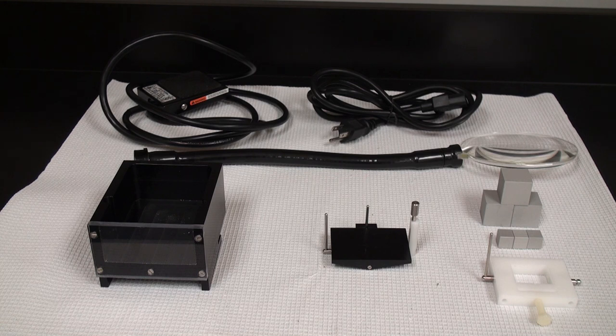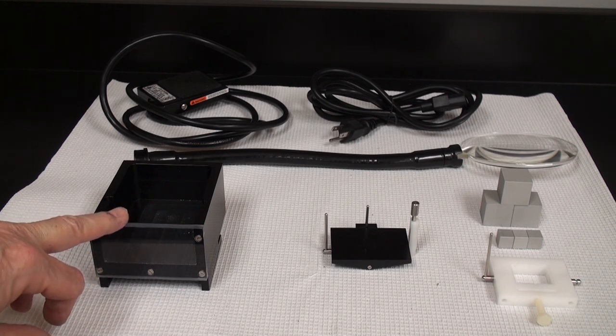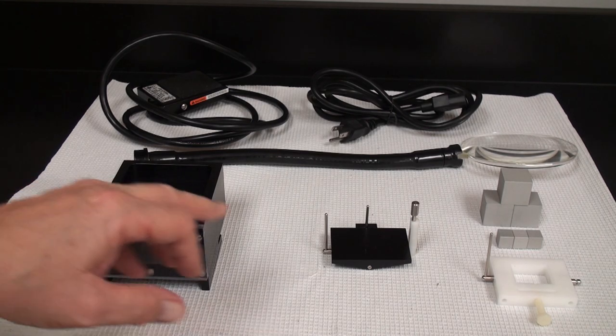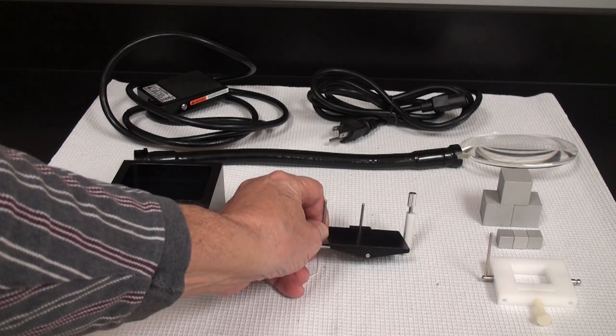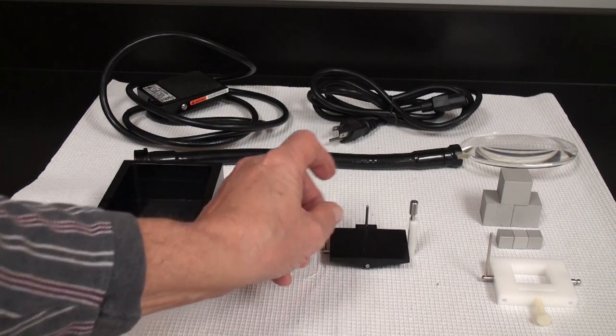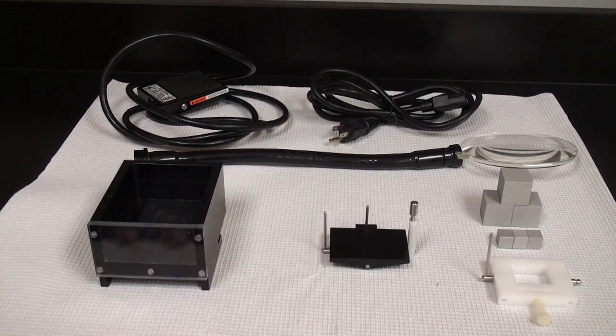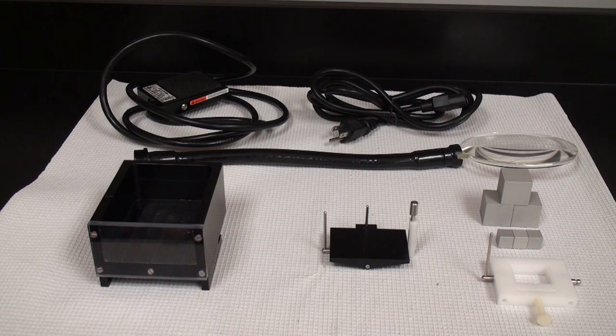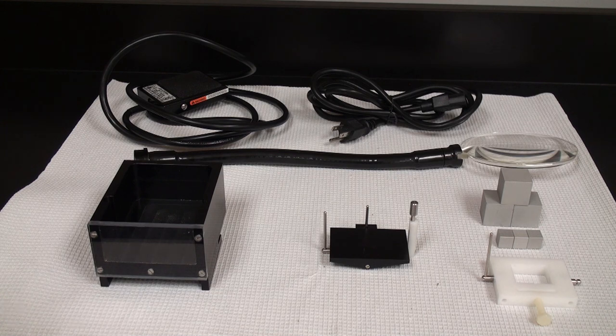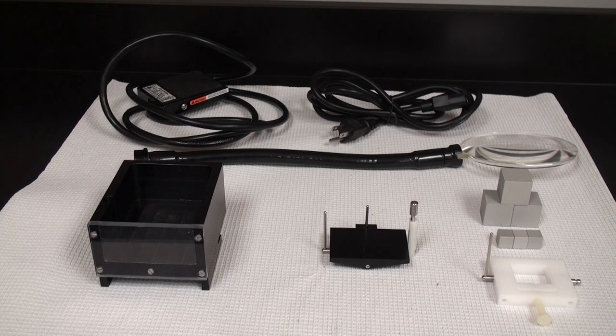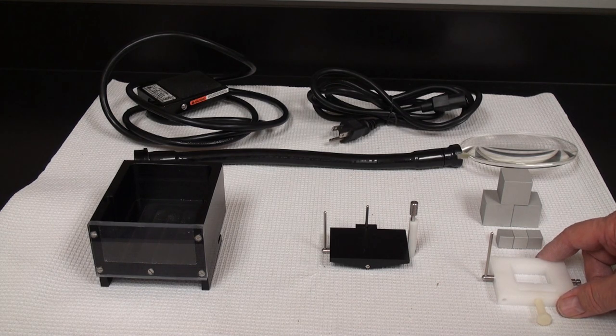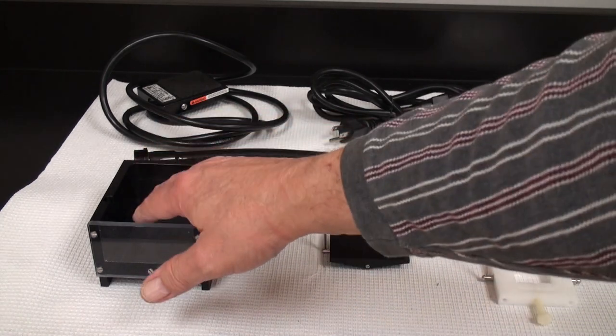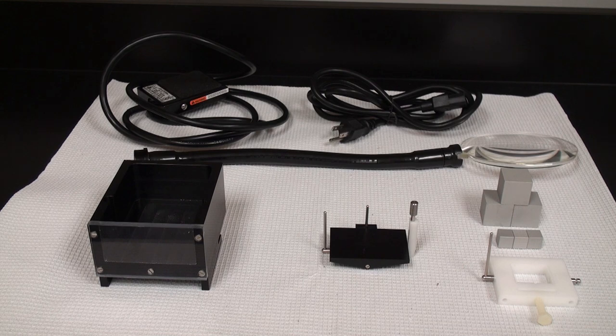These are the accessories that come with the 5000 tissue slicer. Here we have the sectioning tray. Here we have the tiltable specimen stage which you can mount your sample and do small tilt variations to correct for angle differences that you want to remove. If you cut the brain slightly off angle you can correct for this. Right next to that we have the tissue block holder. Both of these items fit into the sectioning tray.